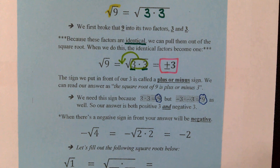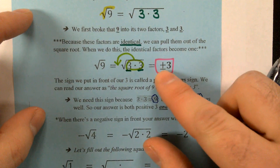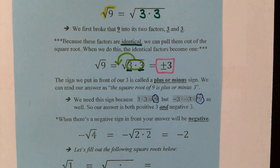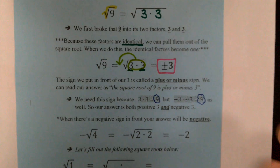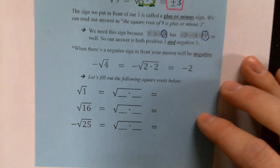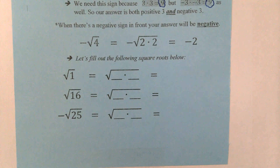Give me a show of thumbs if the concept of a plus or minus sign makes a little bit of sense now. Thumbs up if it does make sense, thumbs sideways if you're still not sure why there are two symbols there. Now, when there's a negative sign in front of your square root, the whole plus or minus situation goes away because our entire answer is going to be negative.